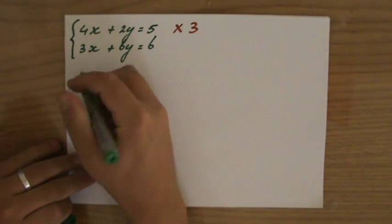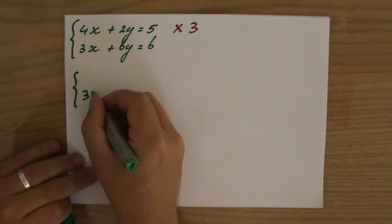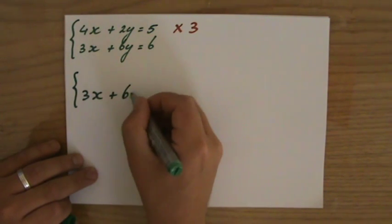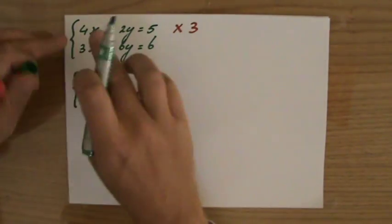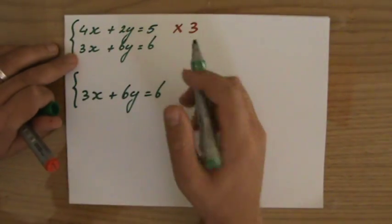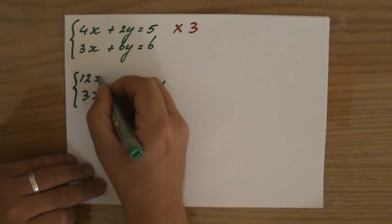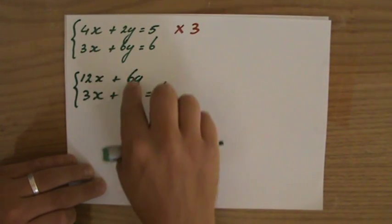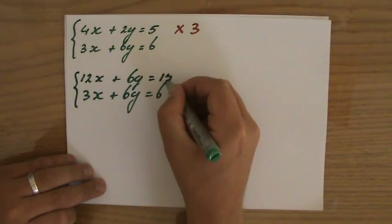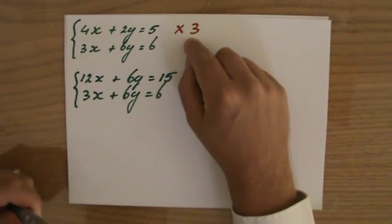Because now the new situation. So the second one still is 3x plus 6y equals 6. And the top one I multiply every term by 3. Every term. So that becomes 12x plus 6y. That's good. Now I can eliminate them. Equals 15.